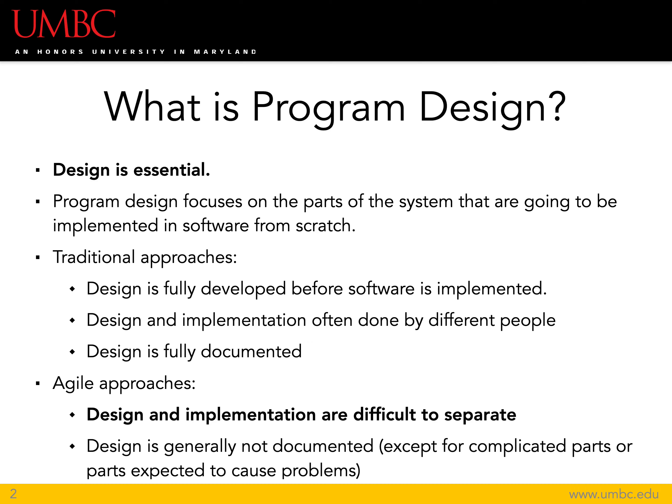In an agile approach, however, design and implementation are very difficult to separate, so much of what I'm saying in this lecture would be a little difficult to apply to an agile software project. Normally you're not going to have documentation for design, though you may have design documentation for complicated parts — that is actually kind of the goal of agile. Agile isn't saying everything about the traditional approach is terrible; it's saying it emphasizes the wrong parts, and that in a complicated system you are still going to want design documents for some parts.